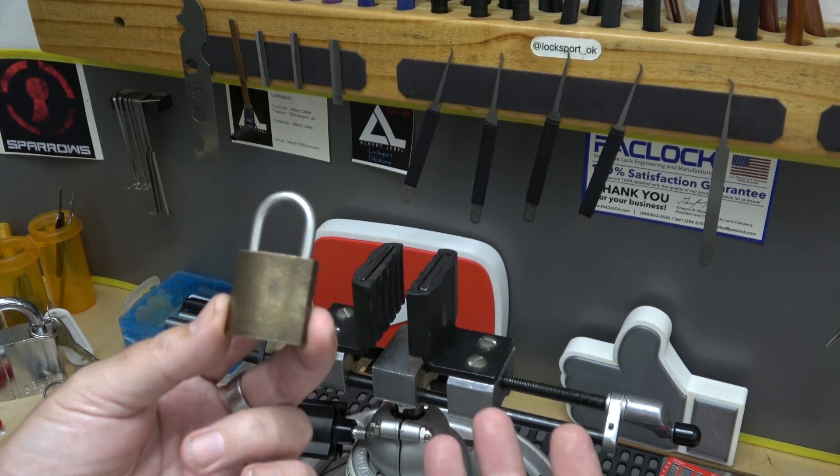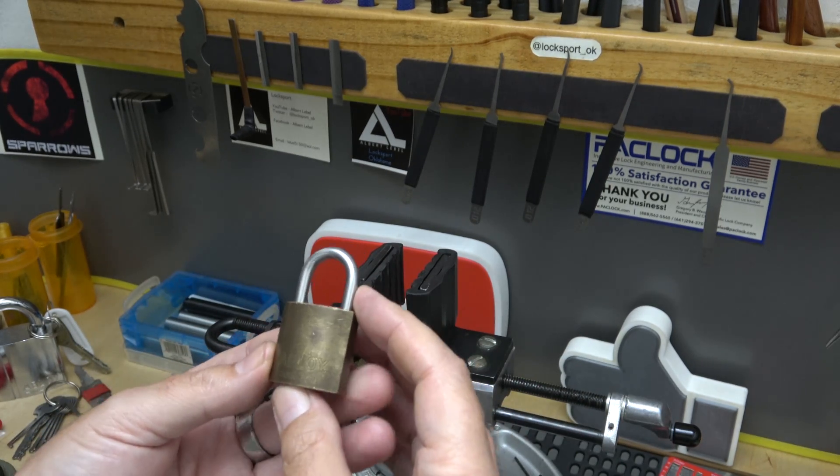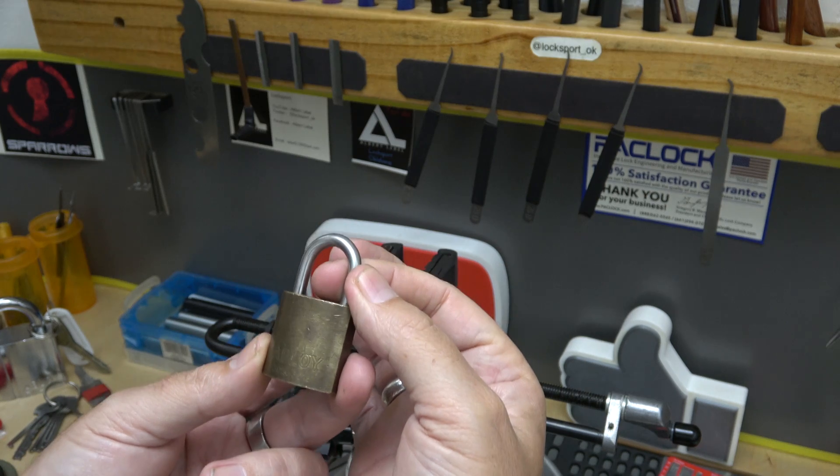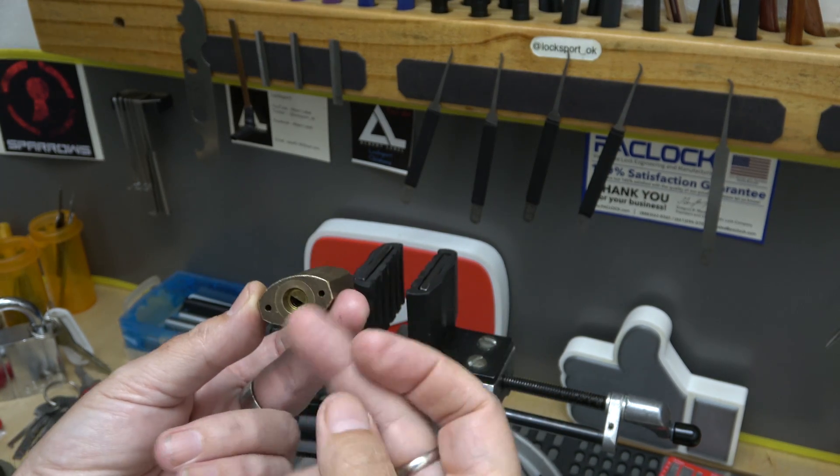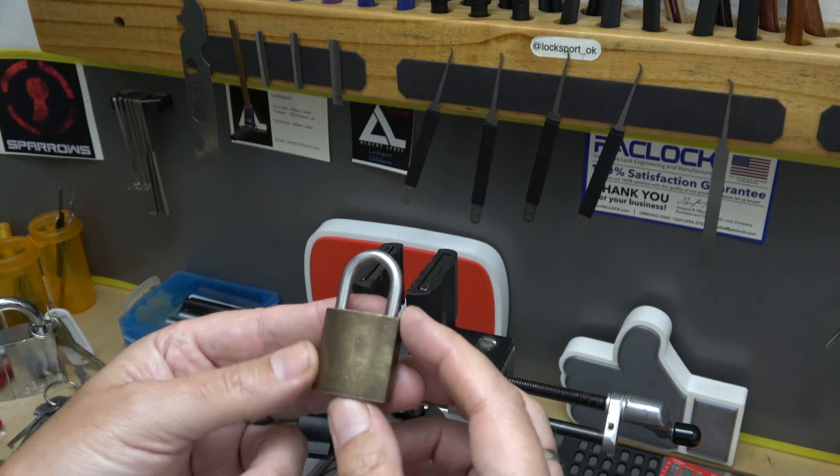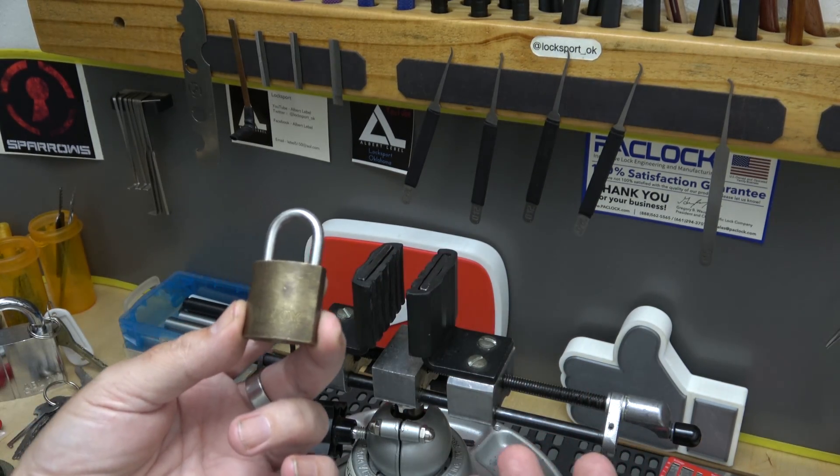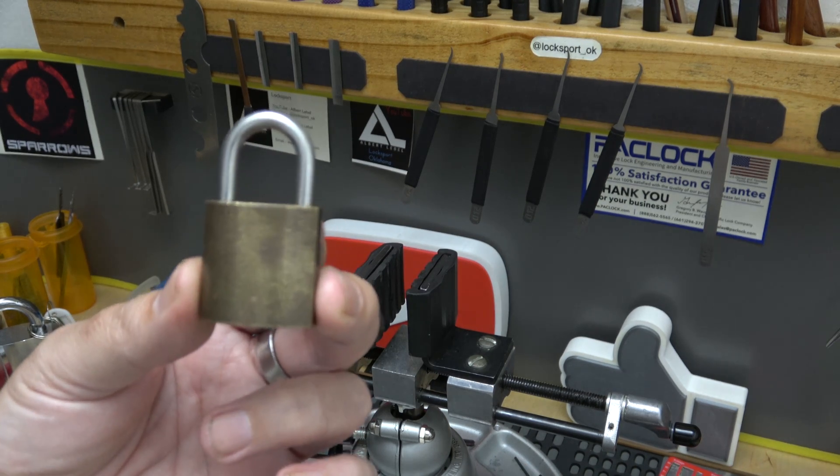So what do you think? Let me know in the comments. What is a high security lock? And how do we determine that? Is it a lock that has to be destroyed to remove it, as opposed to just raking it or shimming it or something like that? I don't know. Please let me know in the comments. Let us know what you think, what's your thoughts on that.